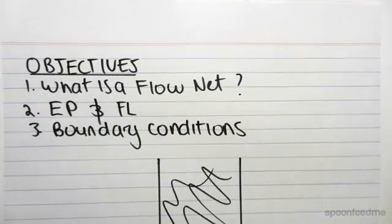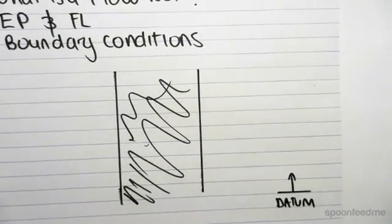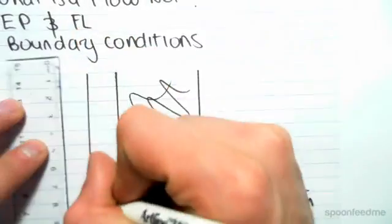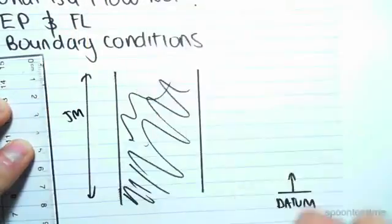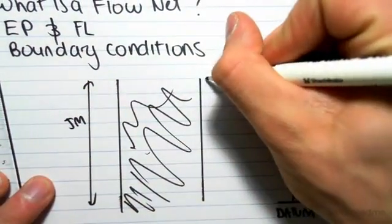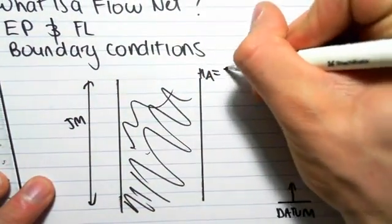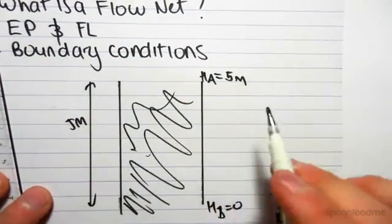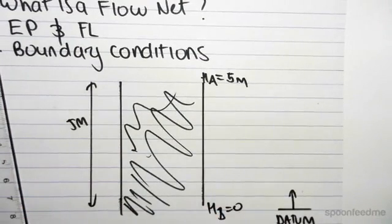Let's say that our datum is at the bottom. Let's say that this height was 5 meters. Let's call this point A. So the head at A would be 5 meters and the head at B would be 0. Just because of the elevation, there's no pressure at all in this system.